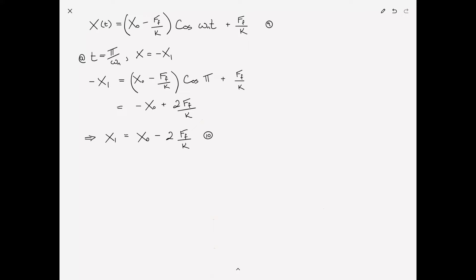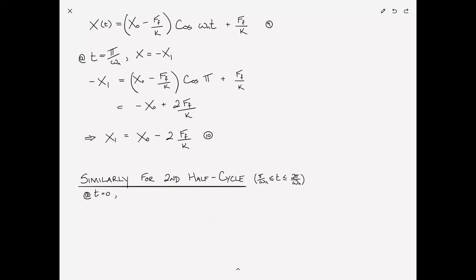For the second half of the cycle — time between pi over omega_n and two pi over omega_n — we proceed similarly. The initial position is now negative X1 and velocity is zero. Similar to equation ten, we arrive at equation eleven: X2 equals X1 minus two F sub F over K.